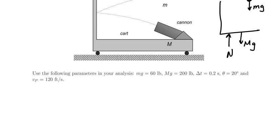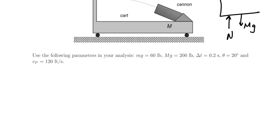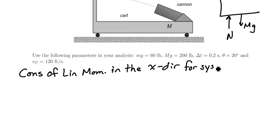So with this in mind, what I'm going to do to start is look at conservation of linear momentum in the x direction for the system, which consists of the cannonball, the cart, and the cannon itself.